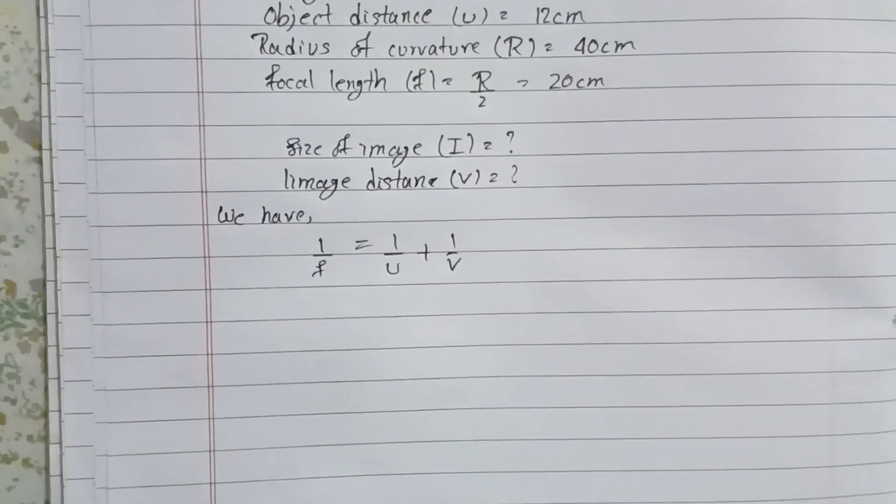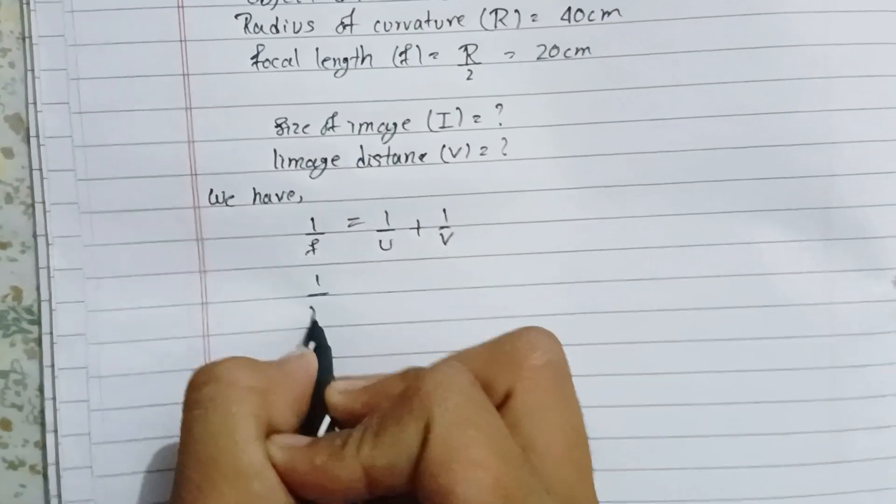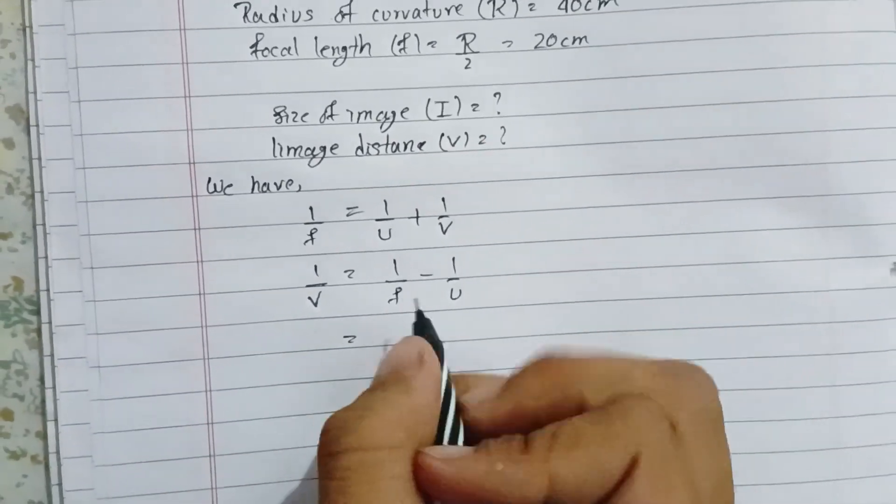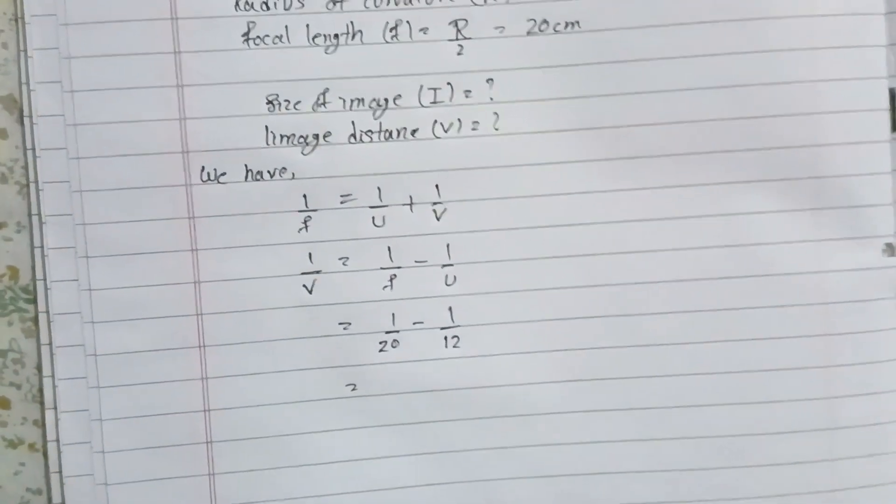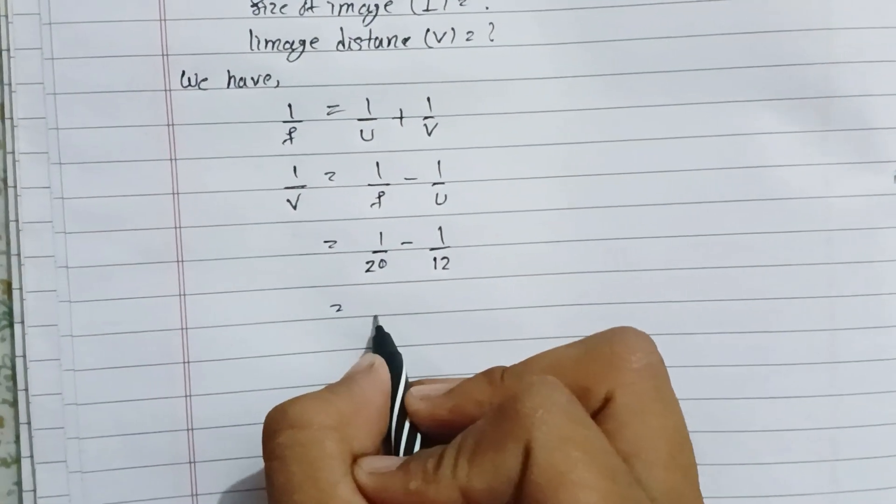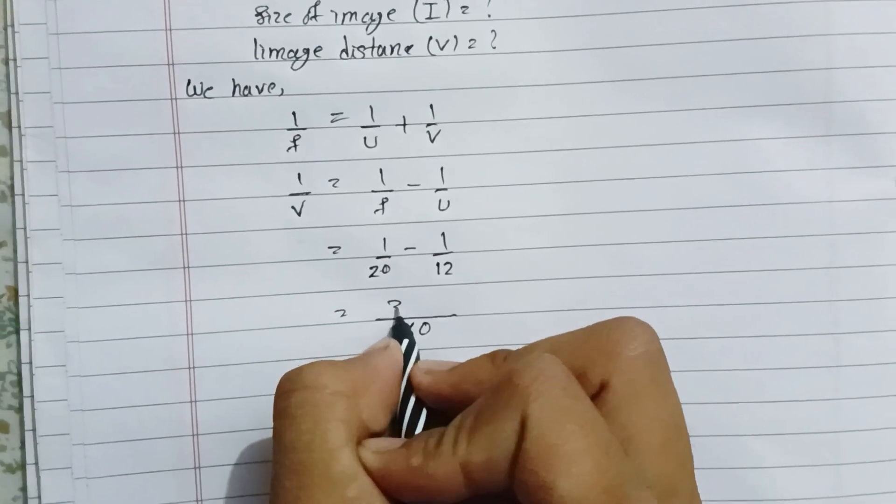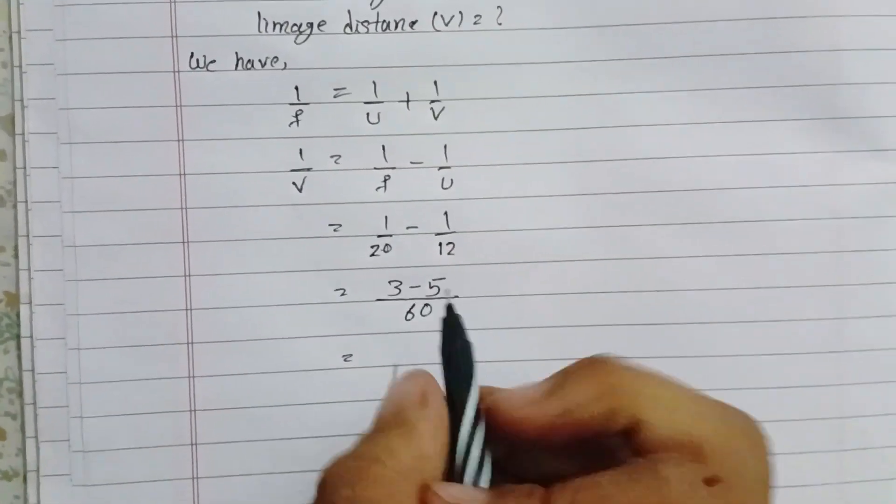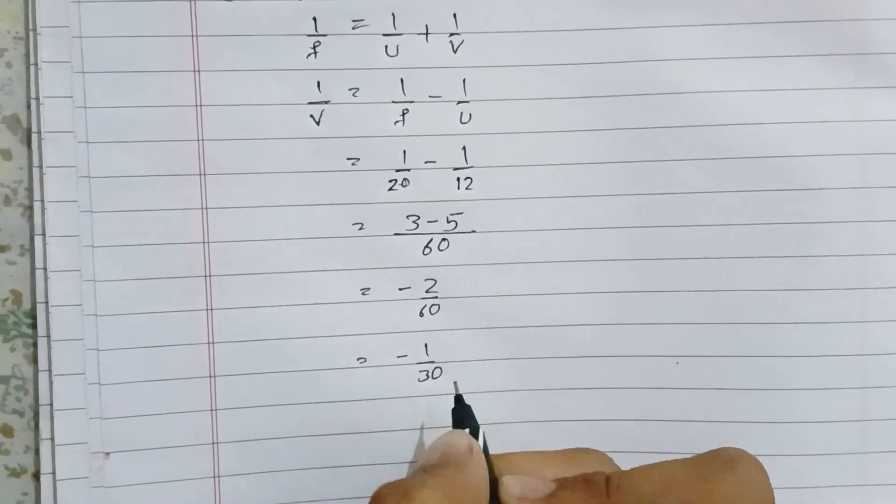Solving for v: 1 by v equals 1 by f minus 1 by u. Substituting values: 1 by v equals 1 by 20 minus 1 by 12. Taking LCM of 60: equals 3 by 60 minus 5 by 60, which gives minus 2 by 60.